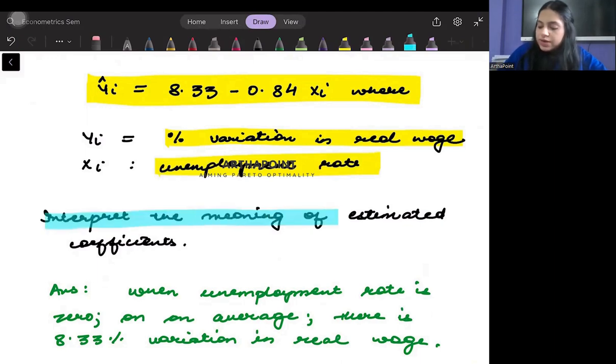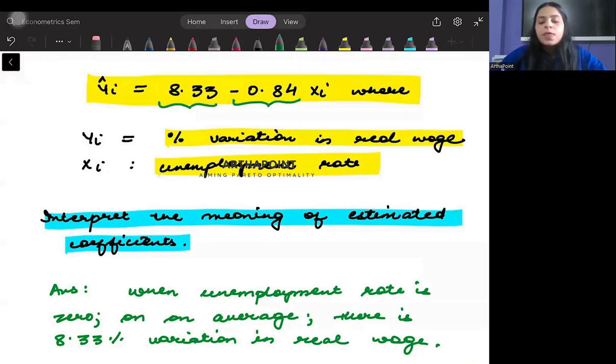You need to go ahead and interpret the meaning of the estimated coefficients. So you need to interpret this coefficient and this coefficient. But first of all we will start with the interpretation of 8.33 which is the intercept.